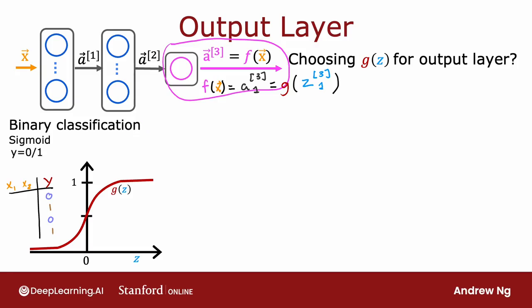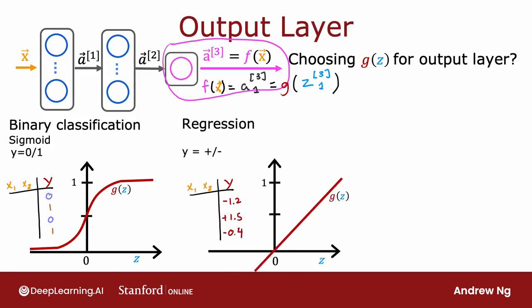Alternatively, if you're solving a regression problem, you might choose a different activation function. For example, if you're trying to predict how tomorrow's stock price will change compared to today's, it can go up or down, so Y would be a number that can be either positive or negative. In that case, I would recommend you use the linear activation function, because the output of your neural network — G applied to Z3 — can take on either positive or negative values.